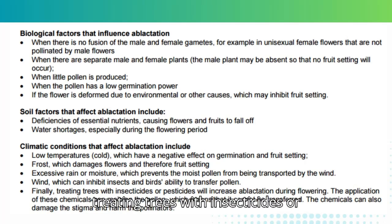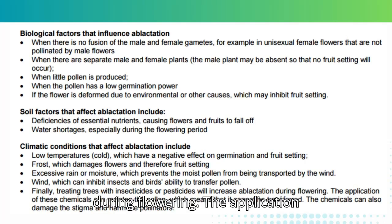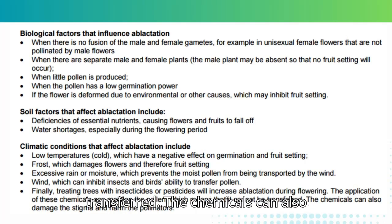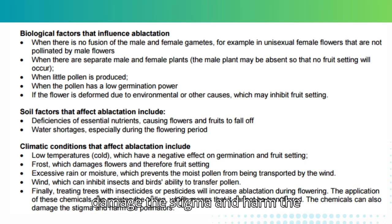Finally, treating trees with insecticides or pesticides will increase ablactation during flowering. The application of these chemicals can moisten the pollen, which means it cannot be transferred. The chemicals can also damage the stigma and harm the pollinators.